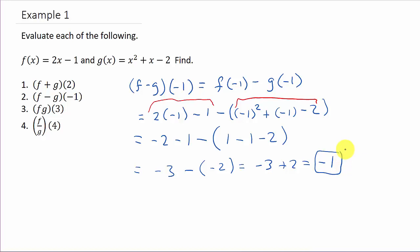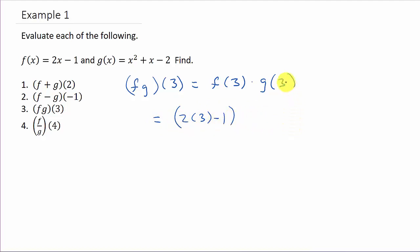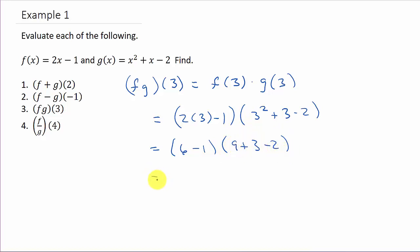Now let's look at the multiplication. This is going to be f of 3 times g of 3. We take the 3 and plug it in. So that's going to be 2 times 3 minus 1 — putting that all in parentheses since we're multiplying — times 3 squared plus 3 minus 2. That's 6 minus 1 times 9 plus 3 minus 2, which is 5 times 10, giving us 50.